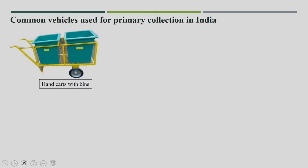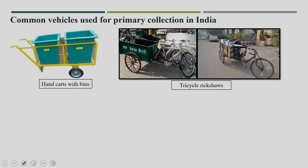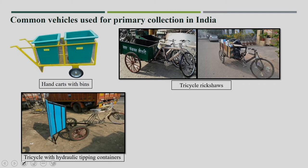There are different kinds of vehicles used for primary collection — one is a hand cart with bins, another is the well-known tricycle rickshaw of different types. In the rickshaw itself, different parts can be used to collect dry waste and wet waste separately. There is also a tricycle with a hydraulic tipping container, which makes unloading of waste from the tricycle to the dustbins area easier. However, without tipping facility, the time required for unloading waste itself is large.